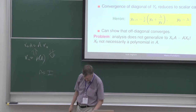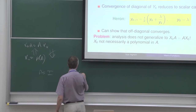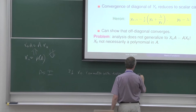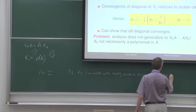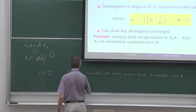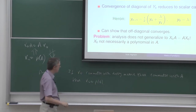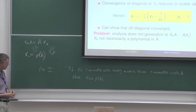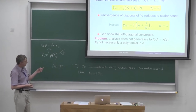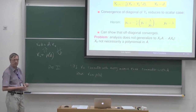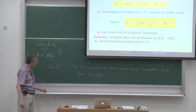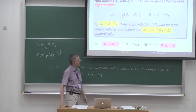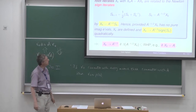Interestingly, there is a slight variation that does work: if x0 commutes with every matrix that commutes with A, then by theorem x0 is a polynomial in A. So it's not enough to commute with A; you've got to commute with every matrix that itself commutes with A. In this result here, all I need to assume is that x0 commutes with A — there's no assumption about being a polynomial in A — so this result is perfectly general.